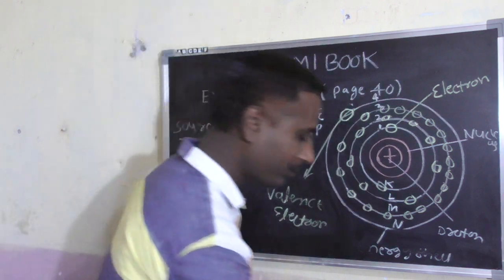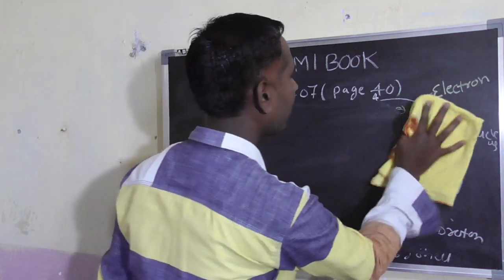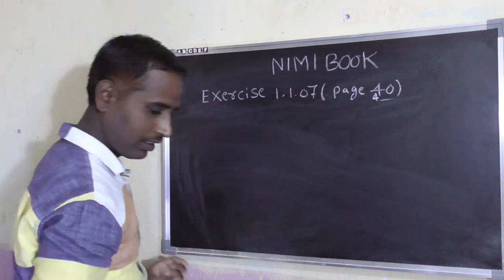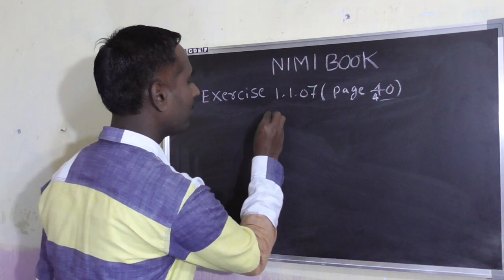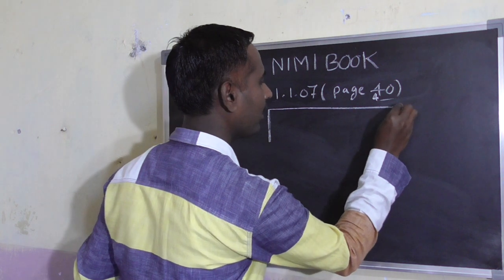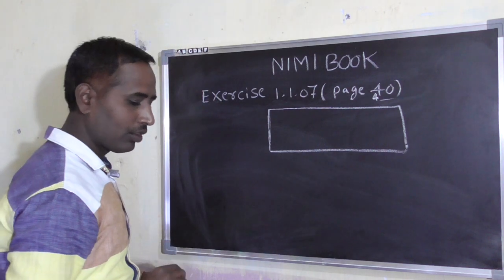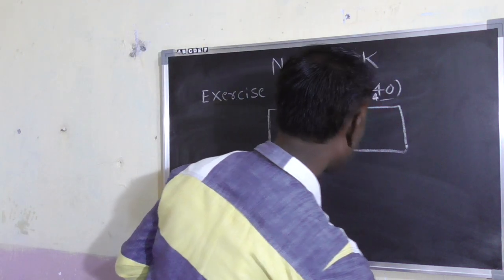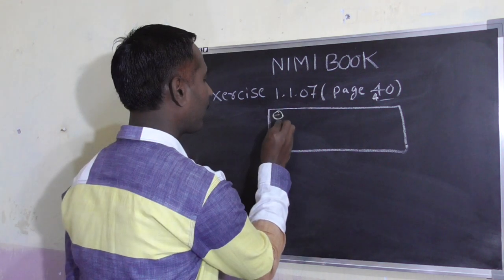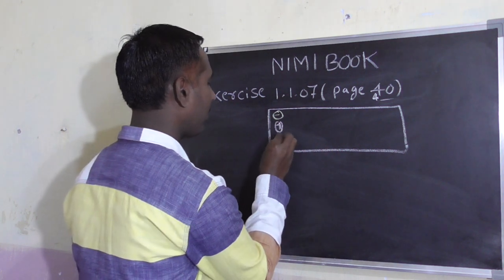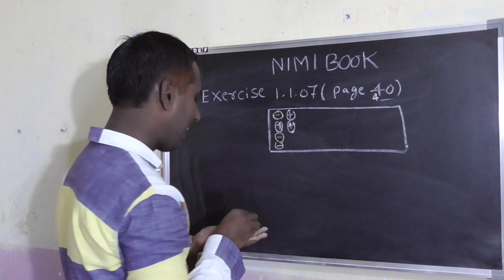अभी एक ऐसा करते हैं — देखो। एक material लेलेंगे। एक material बोले तो उसके अंदर protons और neutrons दोनों रहते हैं। यह electrons हैं, यह proton है — protons और electrons randomly रहते हैं।